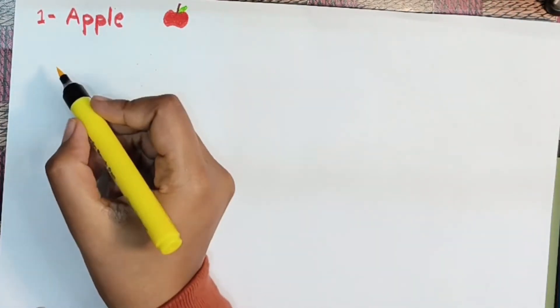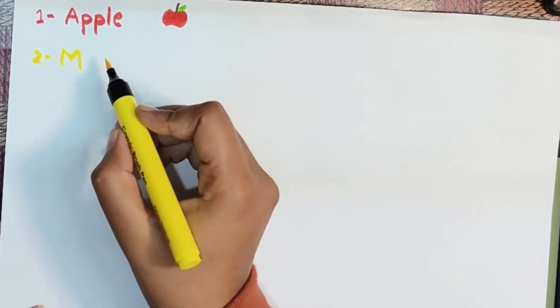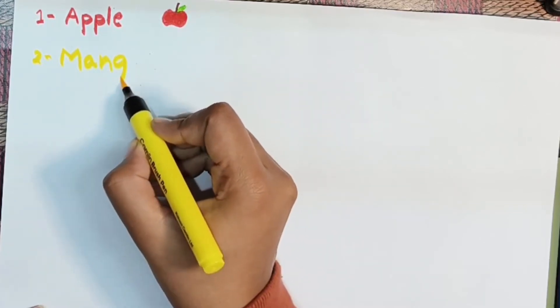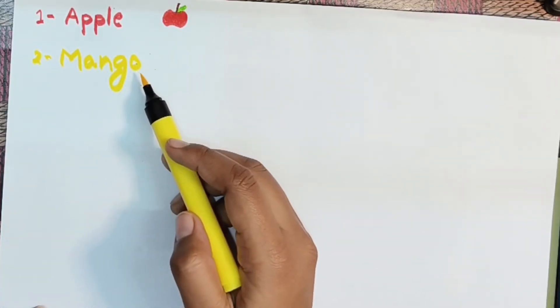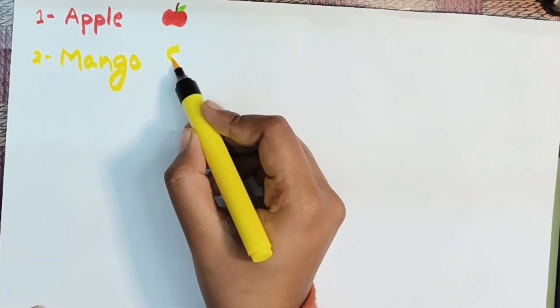First apple, A-P-P-L-E, apple. Second is mango. M-A-N-G-O, mango. M-A-N-G-O, mango.